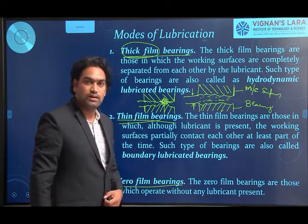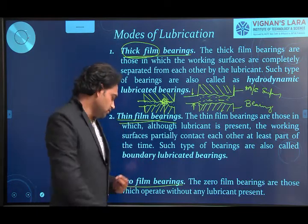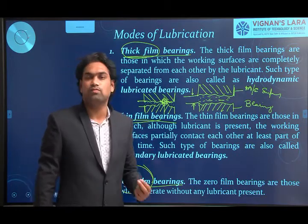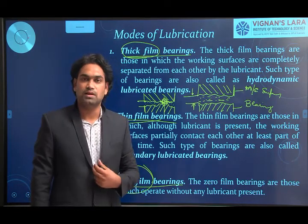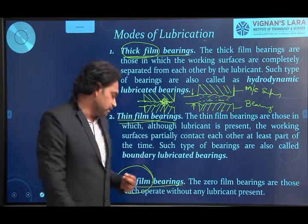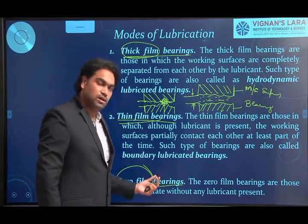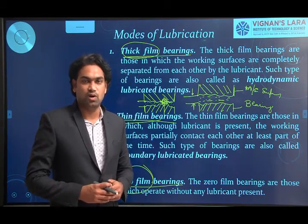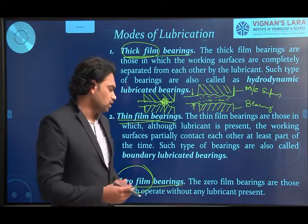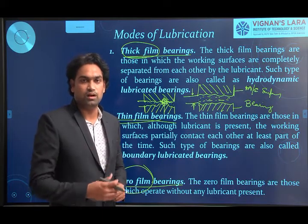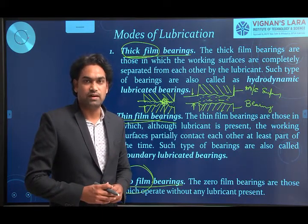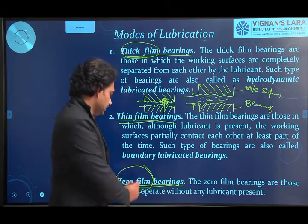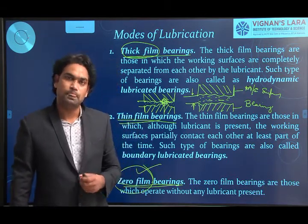There is another type of lubrication: zero film lubrication. As the name implies, there is no layer of lubricant present — unlike thick and thin film where lubricant is present. In zero film lubrication, there is direct metal-to-metal contact. Carbon or graphite can be used as a solid lubricant. A lot of research is ongoing to reduce friction and wear by introducing various materials for better operation without liquid lubrication. This is zero film lubrication, and bearings using it are called zero film bearings.